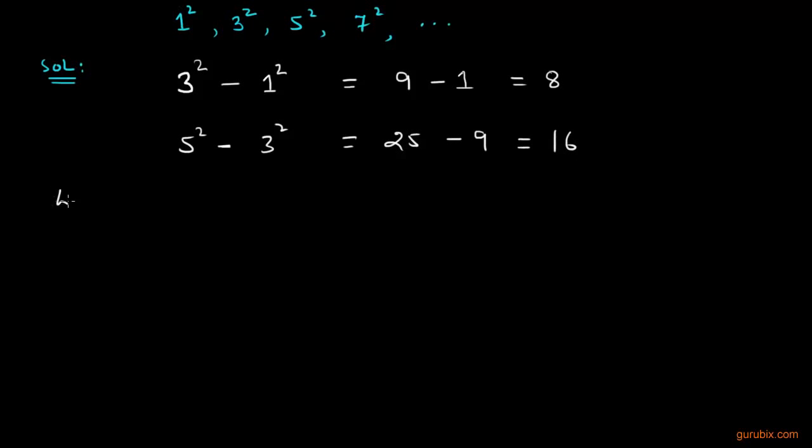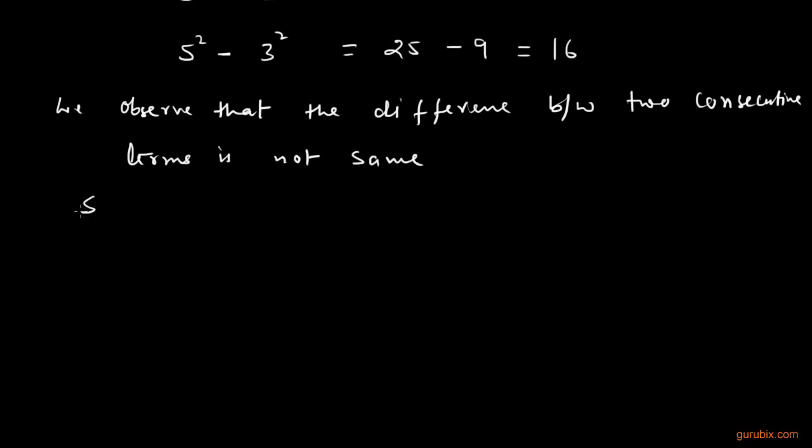So what we observe is that the difference between two consecutive terms is not the same. Since 8 is not equal to 16, therefore this given sequence of numbers is not an AP. So we need not find a common difference and three more terms.